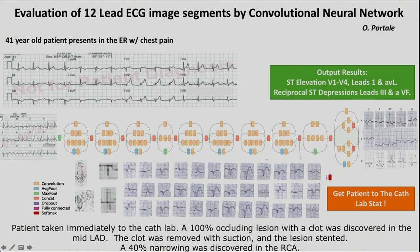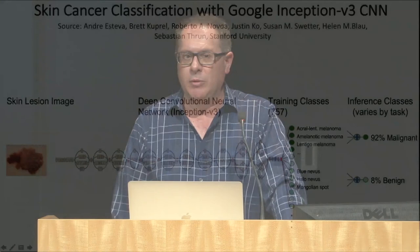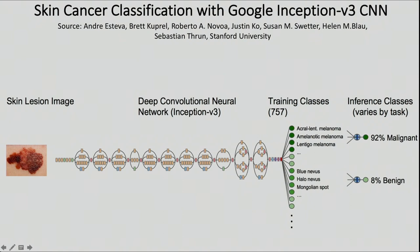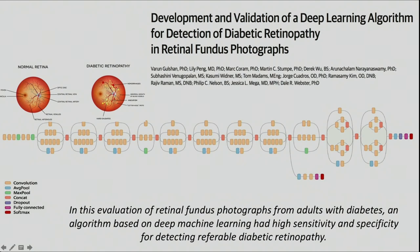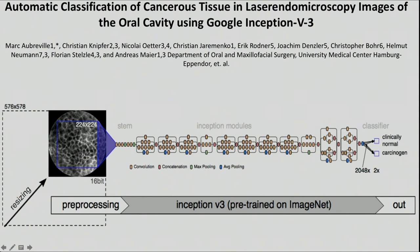The same Inception architecture used in those previous examples has also been used by a group at Stanford in dermatology — training on skin lesions and predicting at the fully connected layer whether a lesion is malignant or benign. Similarly, the team at Google applied the same style of network to diabetic retinopathy, using images of healthy eyes and eyes with diabetic retinopathy, going through convolution, activation, and pooling to ultimately predict whether a patient has diabetic retinopathy. And using that same Inception network, a group out of Germany used images of the mouth to detect incidence of oral cancer.